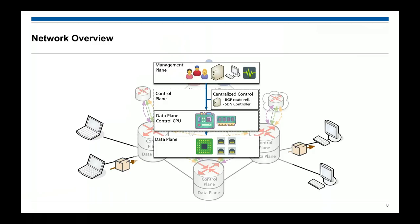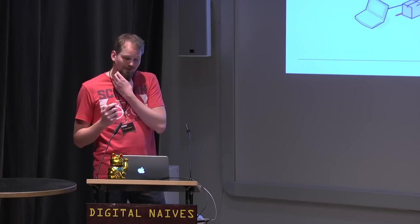Going one step further in abstraction: we have the data plane with special chip stuff, the control plane CPU like a normal PC, and a new element — centralized control. In some cases you want the control plane functionality — which decides what the chip does — on a different computer. This is called software defined networking. In BGP you often use a route reflector which is somewhat similar. The control plane might also be a remote server. Then you have the management plane, which involves monitoring and usually human work today.